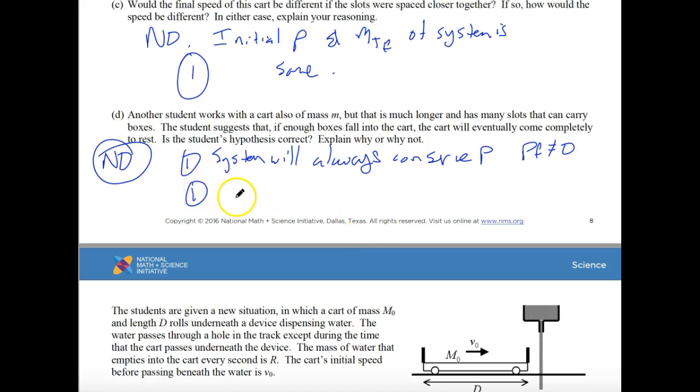And the second point for this one is the system will slow down since the mass increases, but it will never stop. So the system will slow, and you could also say it will decelerate, but you just need to put VF can never be equal to zero. So that's your second point.